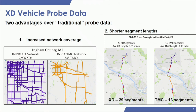Overall, it's about a five- to six-fold increase in terms of the number of segments. In terms of shorter segment lengths, this example pulls data from I-79 in Pennsylvania. The XD segment lengths are smaller — in this case, half. That's six XD segments for one TMC, meaning you can have six travel times available versus just one with TMCs.